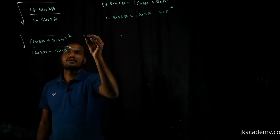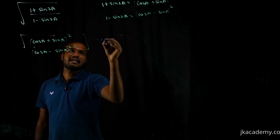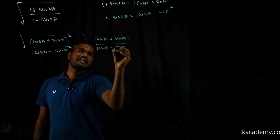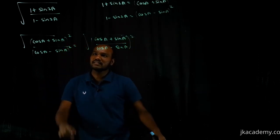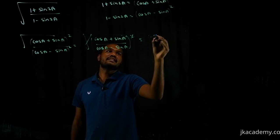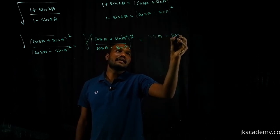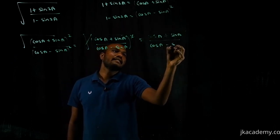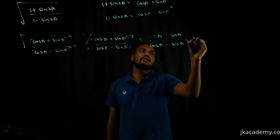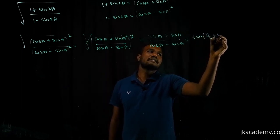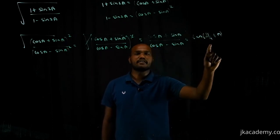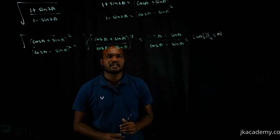Substituting: √((cos a + sin a)² / (cos a − sin a)²). The square root and the squares cancel each other, leaving us with (cos a + sin a) / (cos a − sin a). Now, cos a + sin a divided by cos a − sin a equals tan(π/4 + a). This is a formula you need to remember, and that is the final answer.